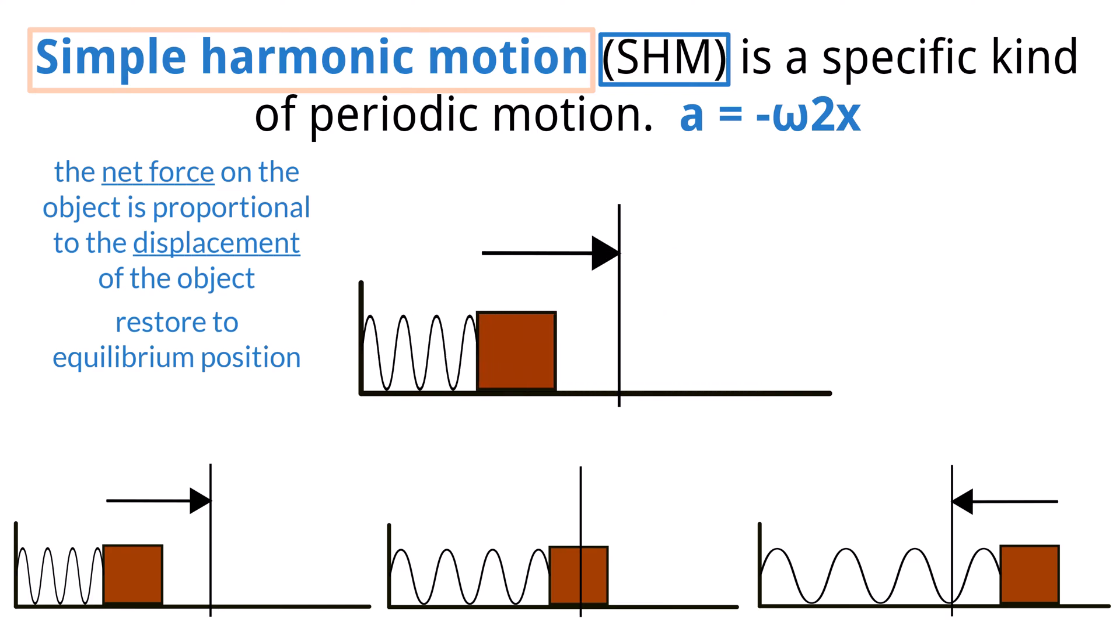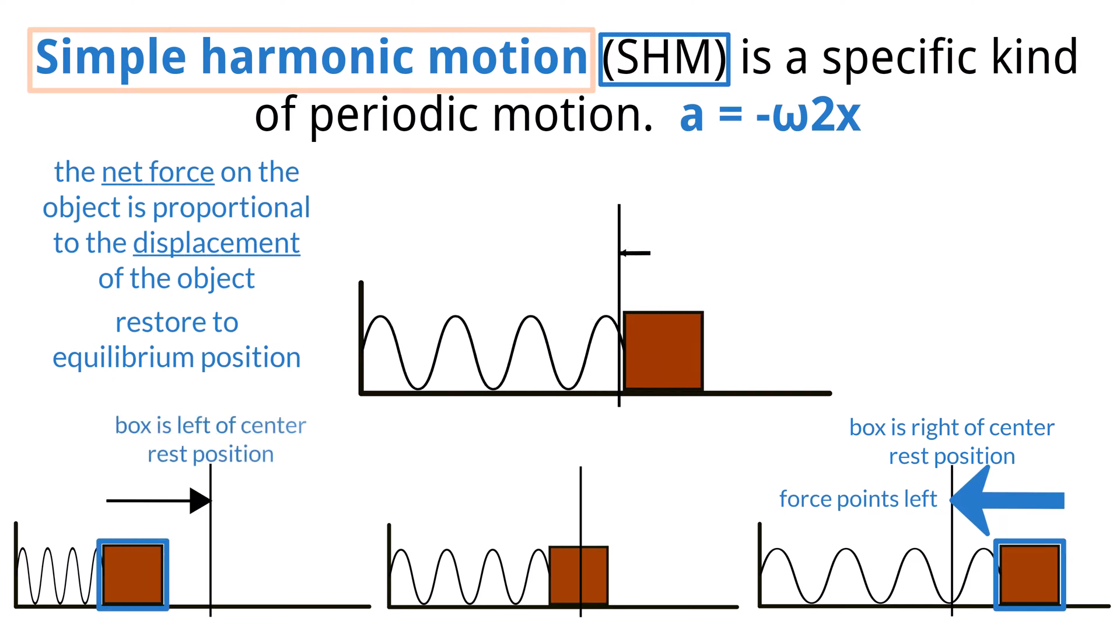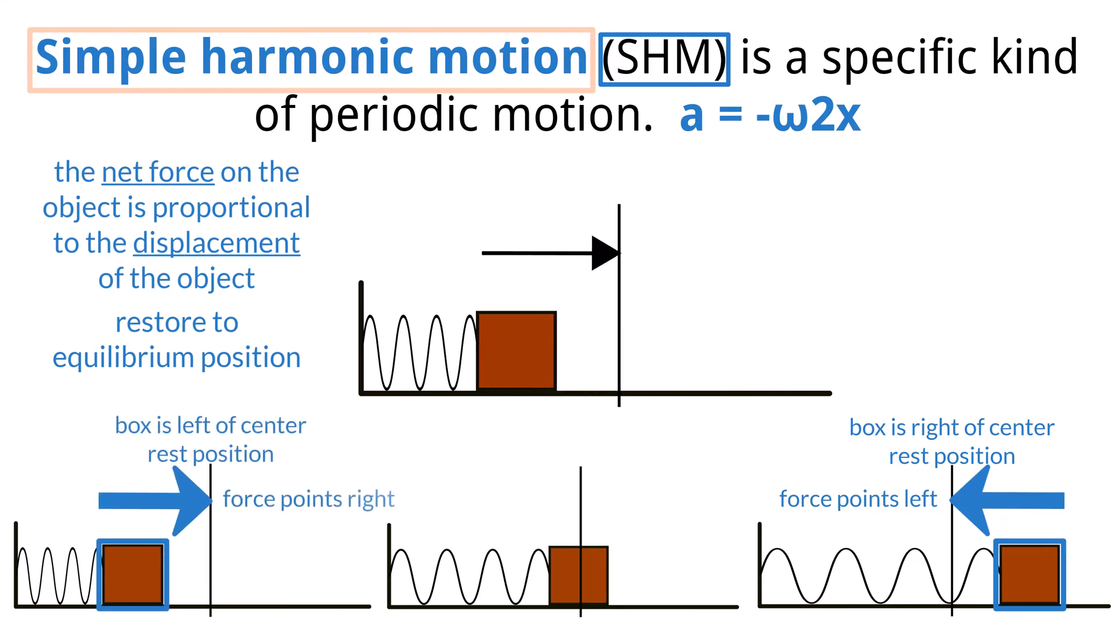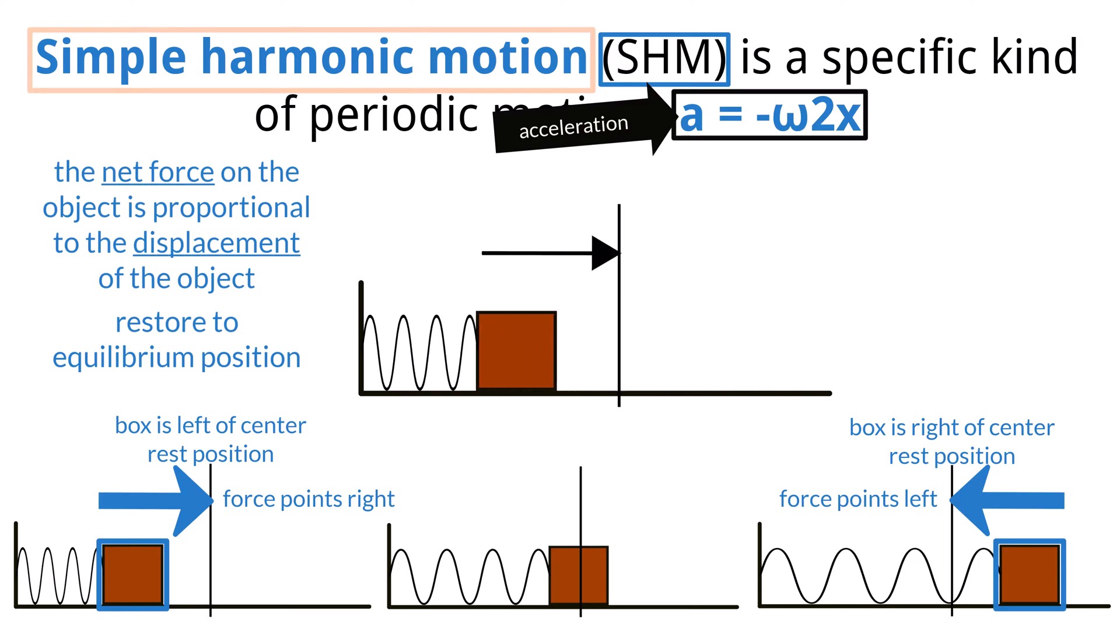As you can see in the box bouncing back and forth on the spring below, when the box is to the right of the center rest position, the force on the spring points to the left. And when the position is to the left of the center position, the force points to the right. The equation shown here describes the motion as I just stated. The only thing of note is that it is given in terms of acceleration instead of force. But remember that net force and acceleration will have the same directional component and be related by mass. Take note that the mathematical way to show that the force or acceleration is always opposite to the displacement is in that the negative sign is in the front of the equation.